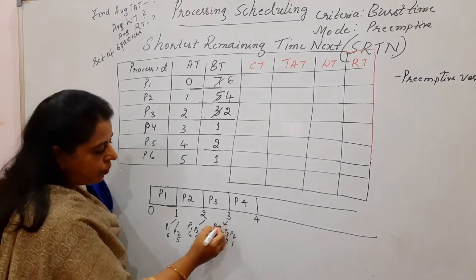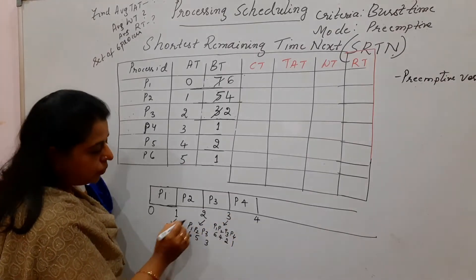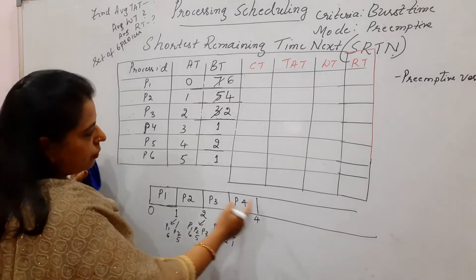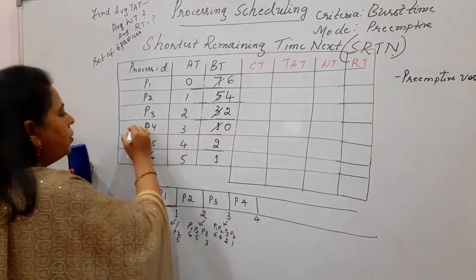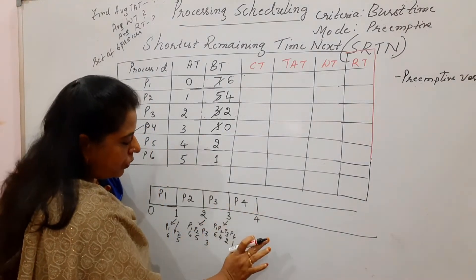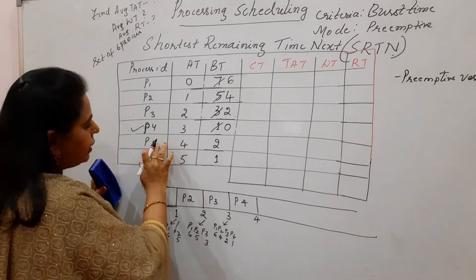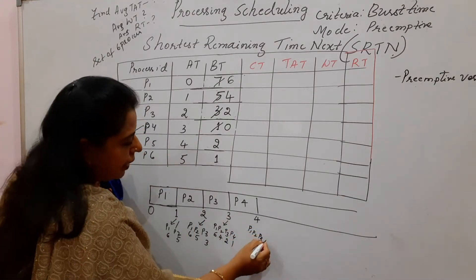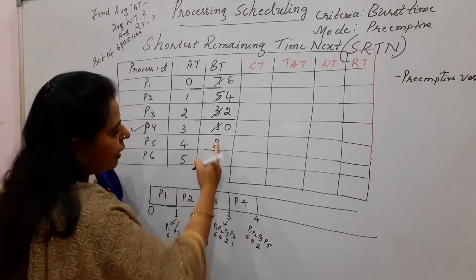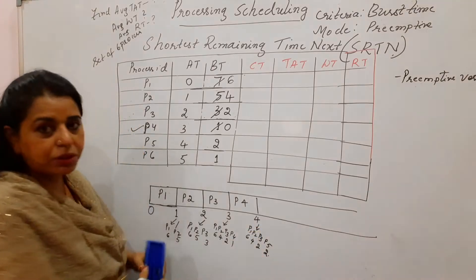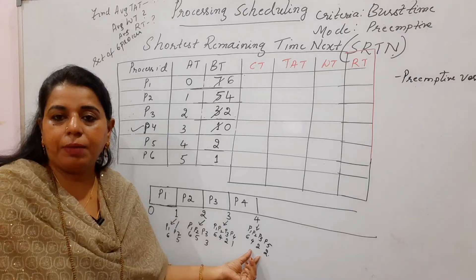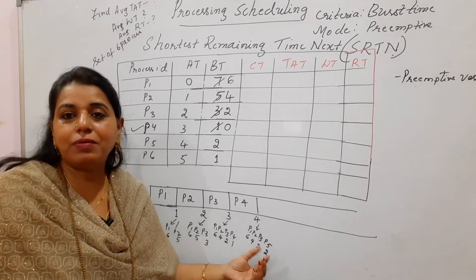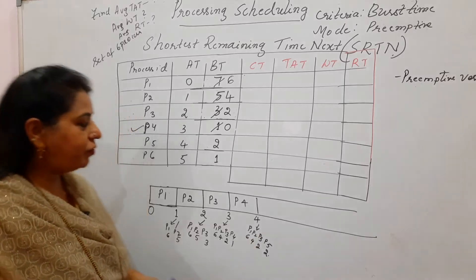Schedule P4 for 1 unit of time; its remaining becomes 0, so P4 has completed its job. At time 4, P5 arrives with burst time 2. The remaining processes are P1(6), P2(4), P3(2), and P5(2). P3 and P5 have the same burst time — when there is a tie, schedule the process that arrived first. P3 arrived earlier, so P3 is scheduled.